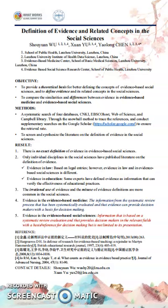Due to time constraints, our study is still ongoing. The current search results do not provide a scientific definition for evidence in the evidence-based social science. Next, we will improve our search strategy and continue to promote the systematic search for the definition of evidence in the social science and consult related experts in order to provide an acceptable and reasonable definition of evidence in the evidence-based social science.